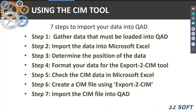So there are seven steps to importing your data. First, you gather the data that must be loaded — you go talk to Rebecca, Spencer, Frank, and get the data, then import that into Excel. Then you determine the positions of the data by going into the menu and looking at the frames and the fields. You format your data for the export — make sure date formats and decimal points are right. Then you check the data in Microsoft Excel with the SIM checker. If it's good, you export it, and lastly you import that into QAD with 36.15.1, 2, and 3.